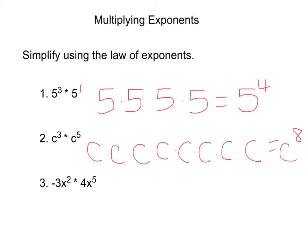Number 3 on the example problems is a little different because it has a coefficient with it. The coefficient of negative 3 and 4 has nothing to do with the law of exponents, so those will just be multiplied like you normally would multiply. Negative 3 times 4 is equal to negative 12, so I know my answer is going to begin with negative 12.